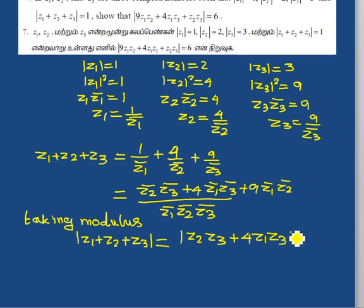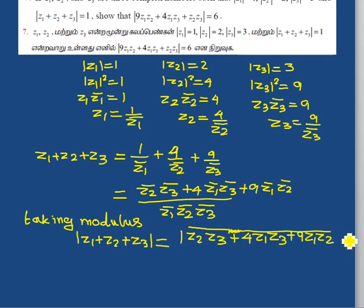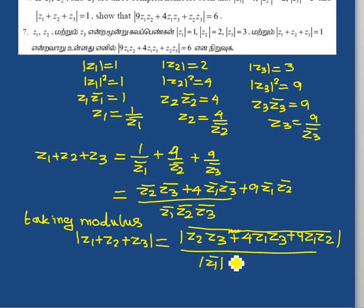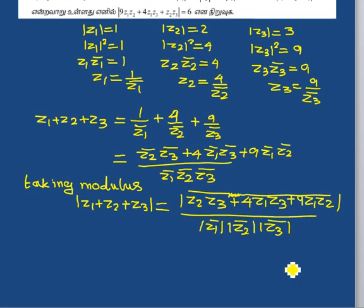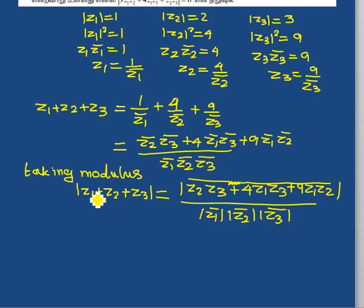Z2 bar plus 9Z1Z2. You can remove all conjugate. Modulus divided by. Now we can remove the modulus of Z3. Now we can remove the value of LHS.